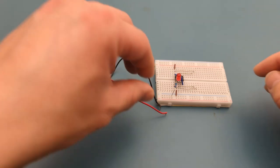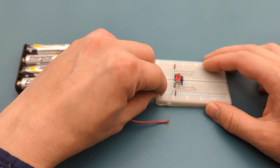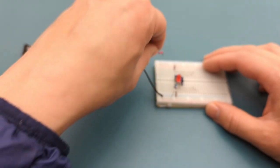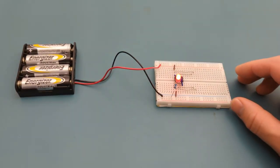It's time to connect the power supply. Attach the negative lead from the battery holder to the negative rail. Attach the positive lead from the battery holder to the positive rail. We have successfully completed the circuit.